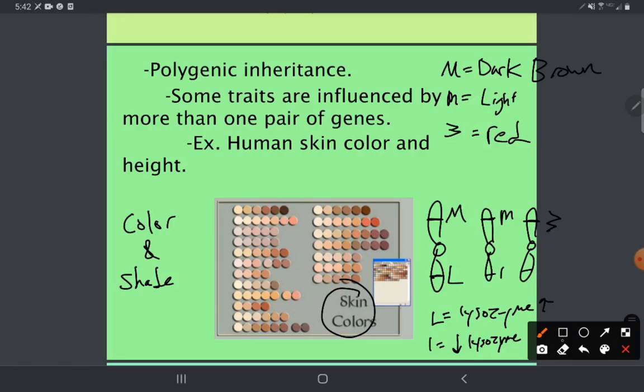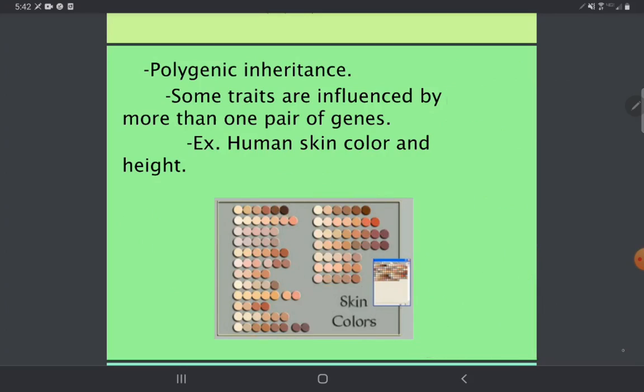That creates a huge variation here. For example, maybe this person has dominant melanin and no lysozyme, so they have the recessive. That creates a huge range of traits.